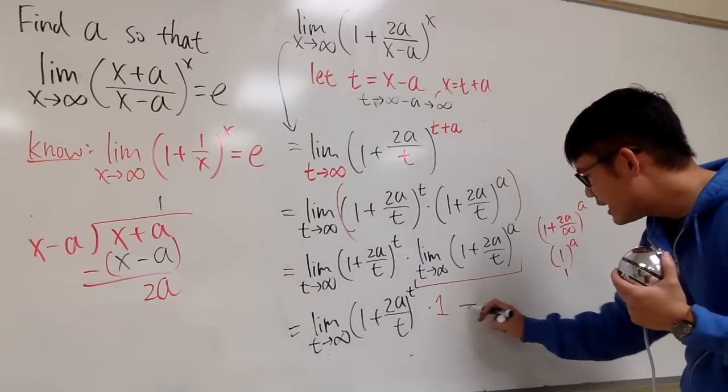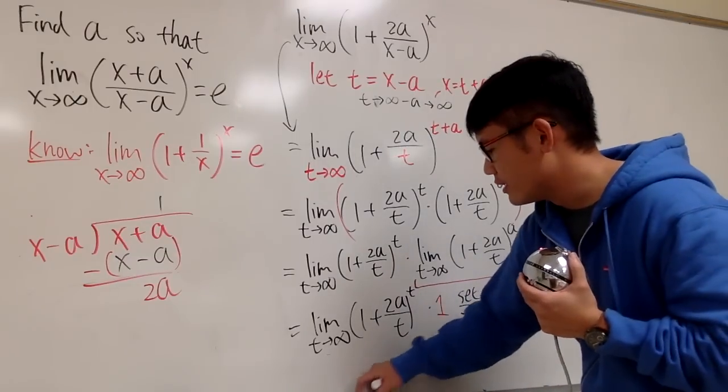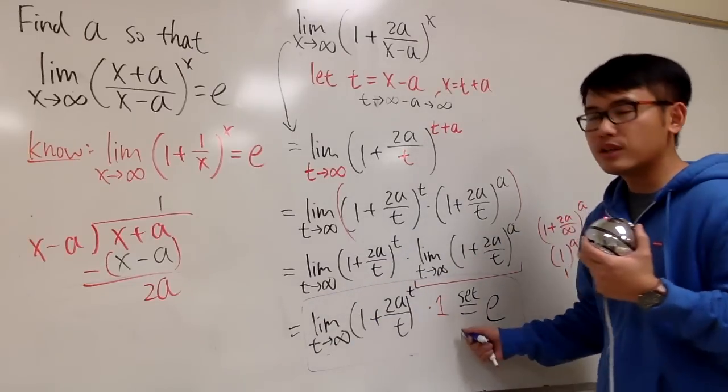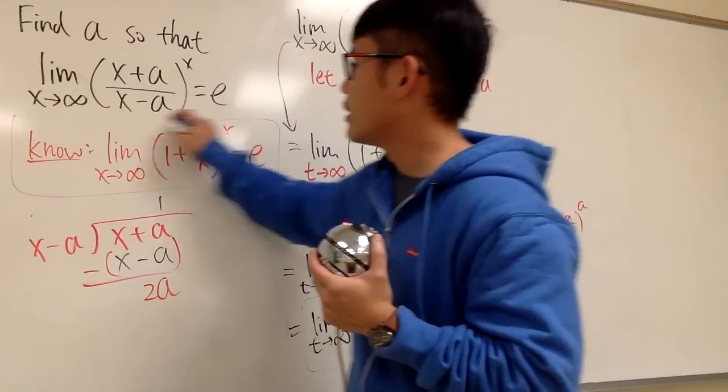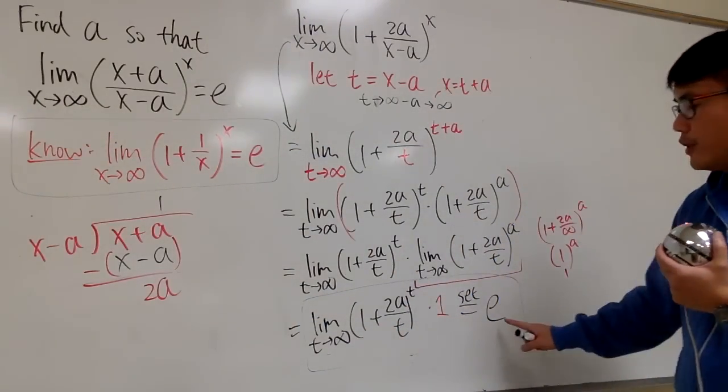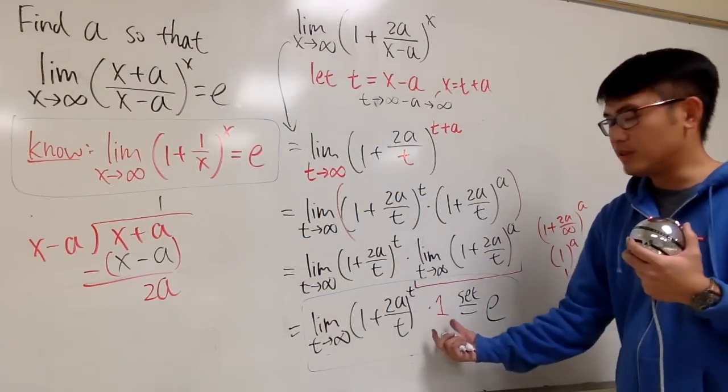And now, let's take a look of this carefully. Take a look of this, and compare with something that we know. Alright, you want this to be e? Sure, I give you the e right here. And 1 times this, the 1 doesn't really matter, so you can ignore that.